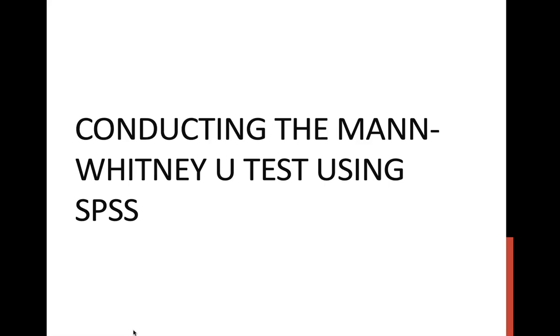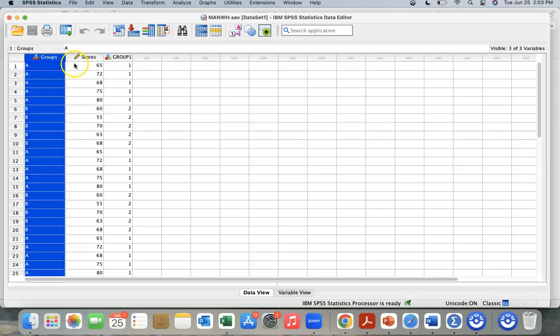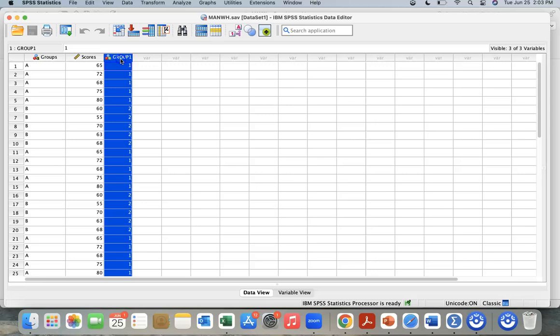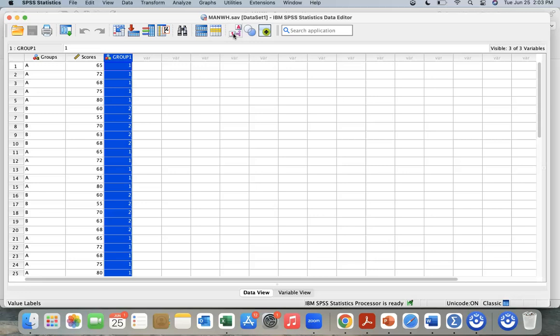Conducting a Mann-Whitney U test using SPSS. We're in our SPSS statistical data editor, and we have three columns. We have group AB, we have the scores, and then we have the group numbers. We can see that one represents traditional, and A represents traditional, and B and two represents interactive.